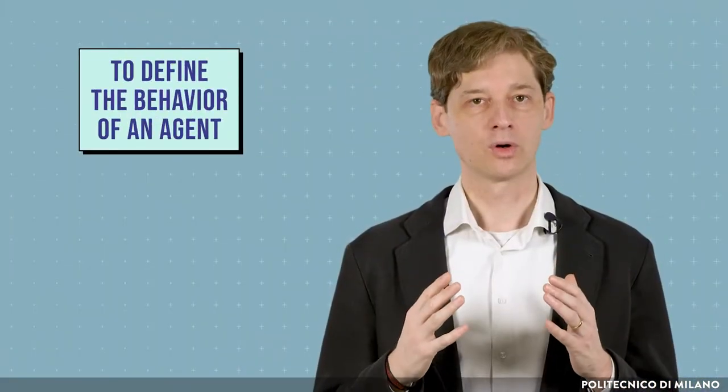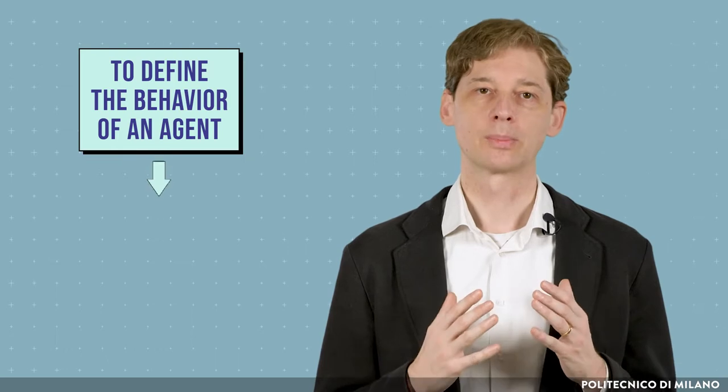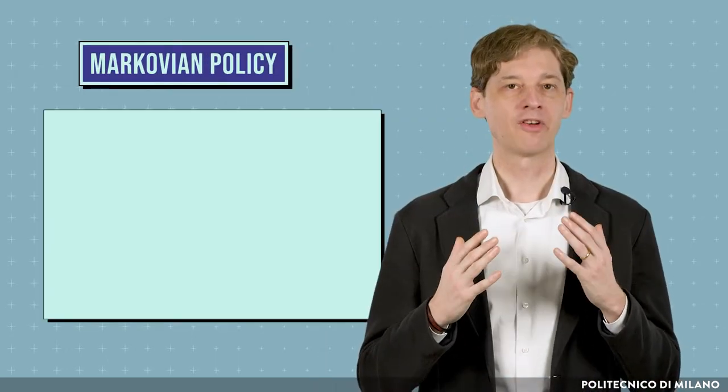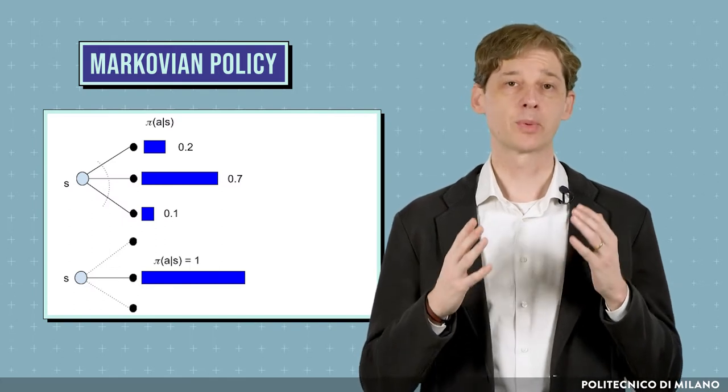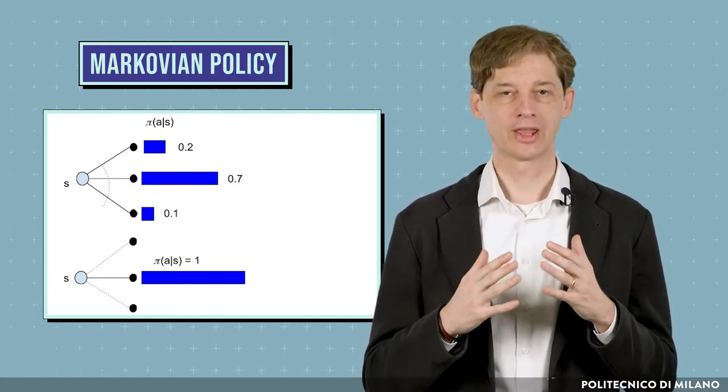To define the behavior of an agent, we use the concept of policy. A Markovian policy is a function that specifies for each state what is the probability of executing the different actions.